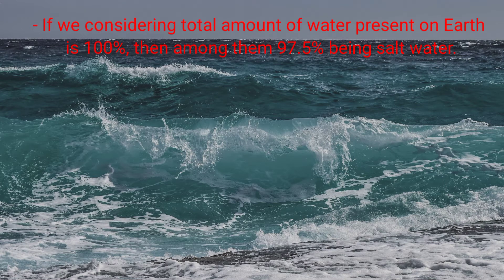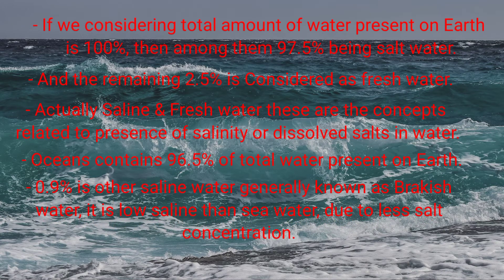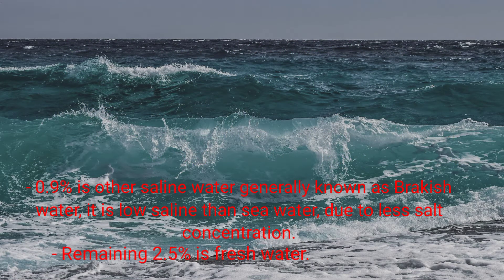If we consider the total amount of water present on Earth as 100 percent, then 97.5 percent is salt water and the remaining 2.5 percent is fresh water. Salinity refers to the presence of dissolved salts in water. Oceans contain 96.5 percent of the total water on Earth. 0.9 percent is other saline water, generally known as brackish water, which has lower salinity than the sea due to less salt concentration. The remaining 2.5 percent is fresh water.